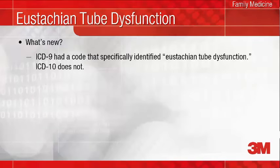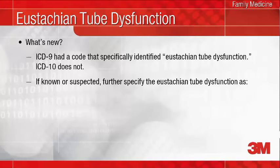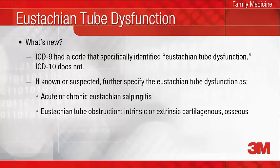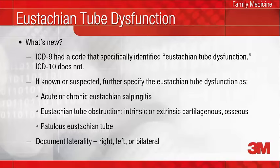The bad news is that while ICD-9 had a code that specifically described eustachian tube dysfunction, ICD-10 does not. Specific eustachian tube disorders described in ICD-10 are acute or chronic eustachian salpingitis, eustachian tube obstruction — further described as intrinsic or extrinsic, cartilaginous or osseous — and finally, patulous eustachian tube, the latter being admittedly somewhat rare. So specify the cause of the eustachian tube dysfunction when known or suspected. Otherwise, eustachian tube dysfunction is reported with a code that states only other specified disorders of the eustachian tube. And don't forget the right, left, or bilateral.